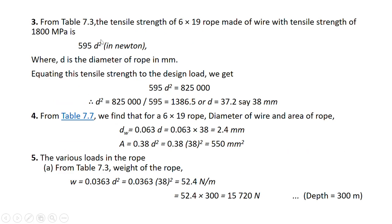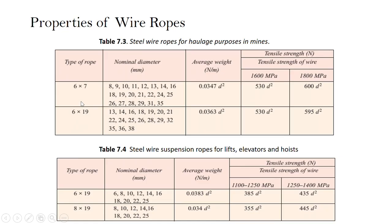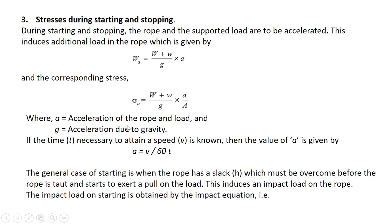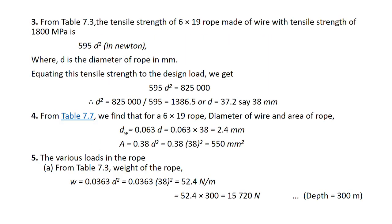Next we calculate the rope diameter. The tensile strength from table 7.3 is 595 D². We equate the tensile strength to the design load, and the rope diameter comes out to be 37.2 mm. We take the integer value 38 mm and check this against table 7.3 — the next standard value after 37.2 is 38. So a rope diameter of 38 mm is chosen. Now we will calculate the wire diameter and area of the rope.